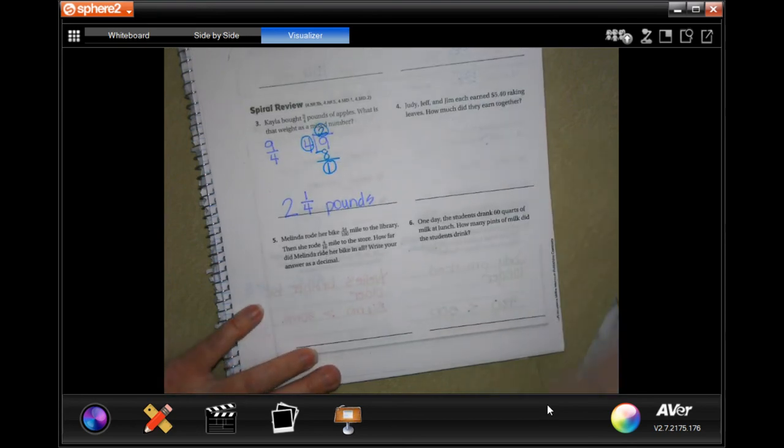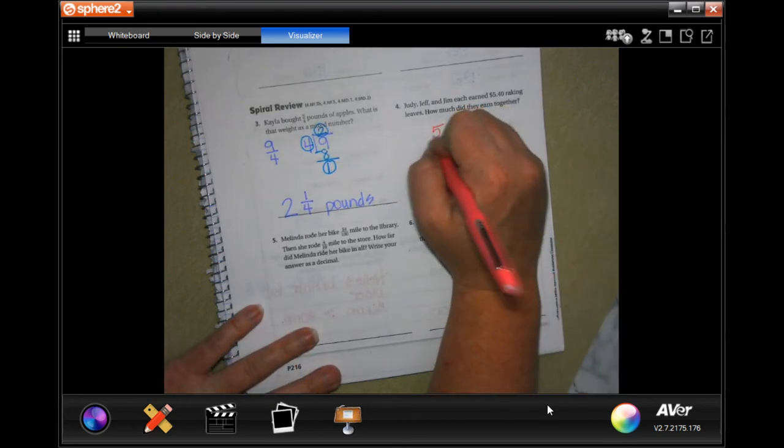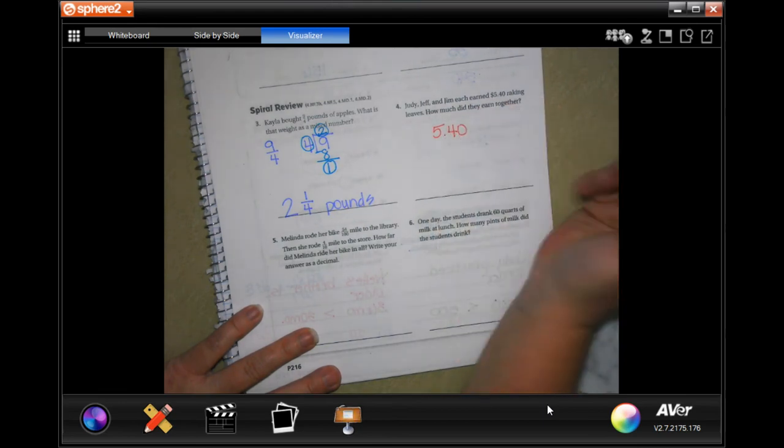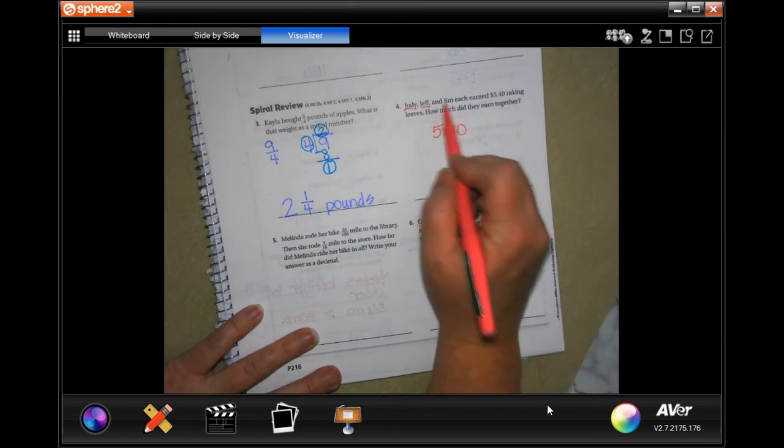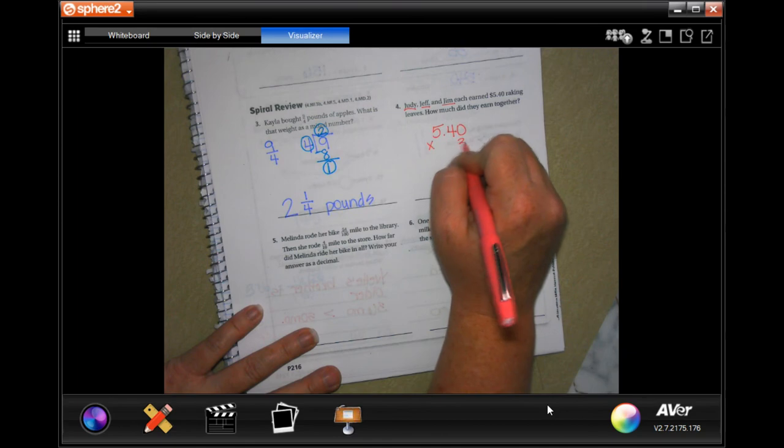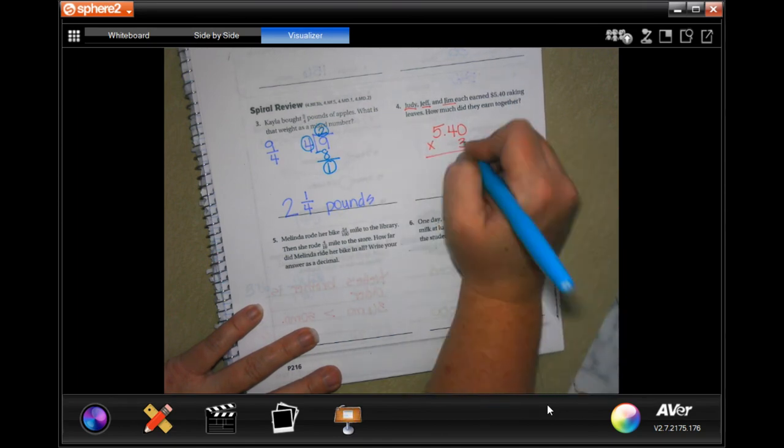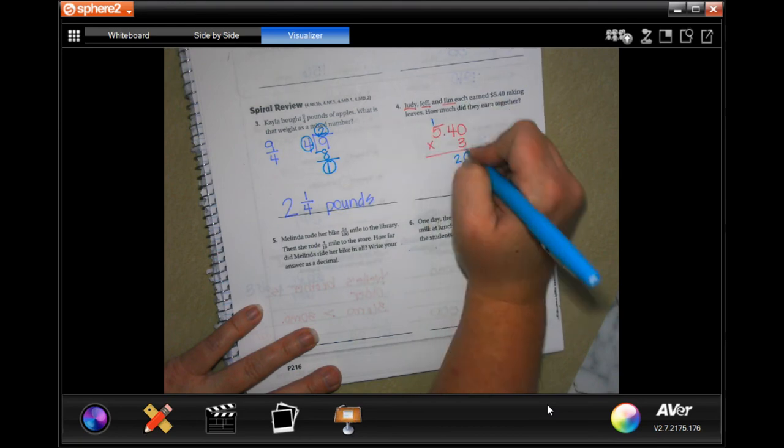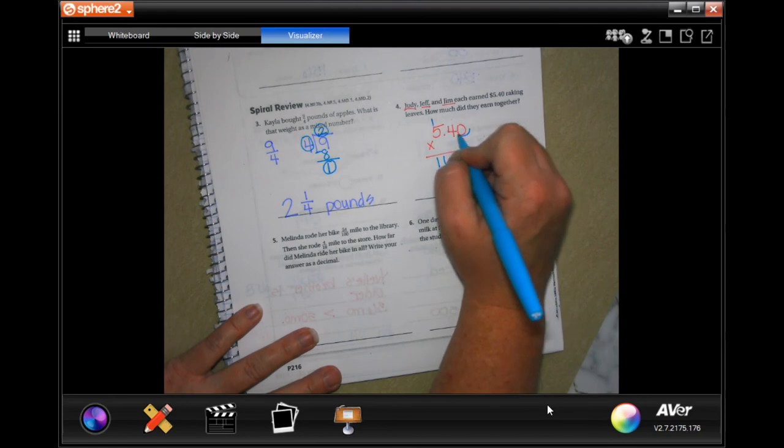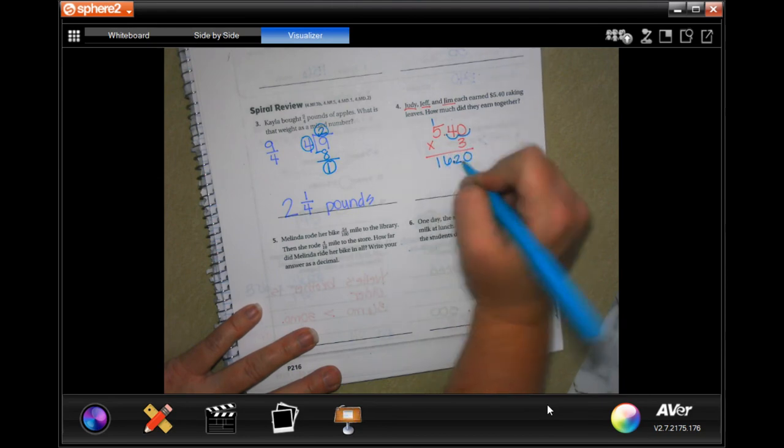Judy, Jeff, and Jim each earned $5.40 raking leaves. How much did they earn together? So $5.40 times three. Three times zero is zero, three times four is 12 carry the one, three times five is 15 plus one is 16, and we're going to go in one two times for the decimal.